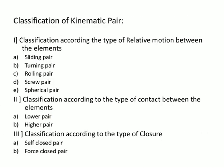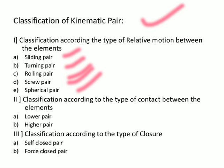Now we will learn the classification of the kinematic pair. The first classification is according to the type of relative motion between the elements, which gives five types: sliding pair, turning pair, rolling pair, screw pair, and spherical pair.